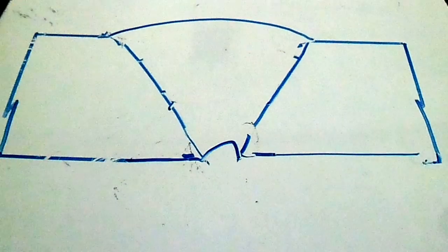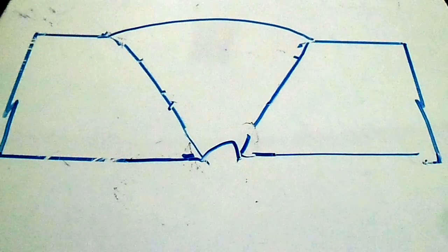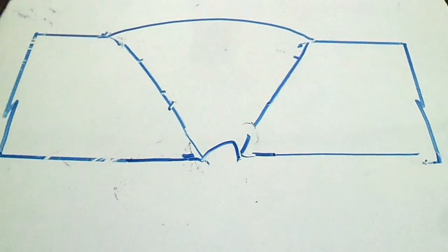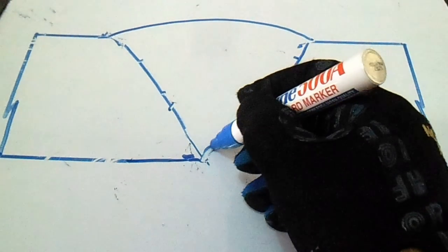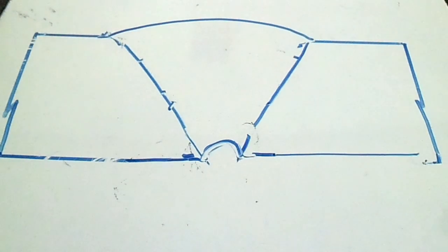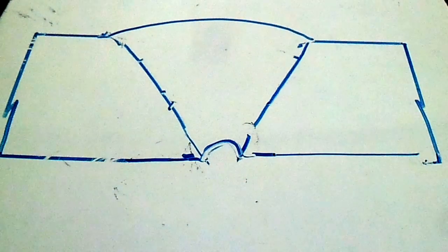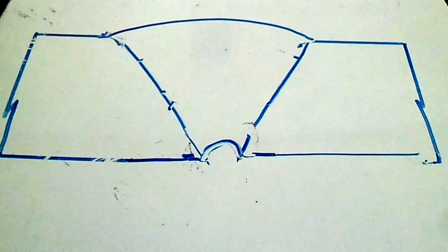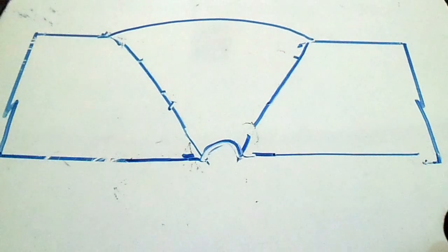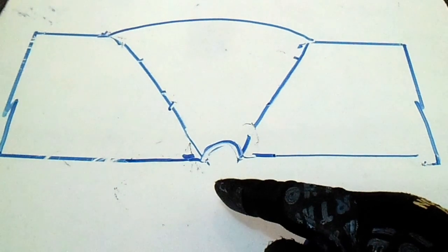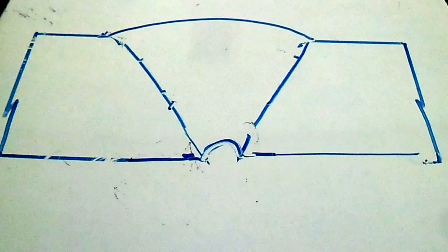The next defect is concavity, also called suck-up. The suck-up occurs from the root pass. The reason is excessive amperage, high amperage, or incorrect weaving technique.